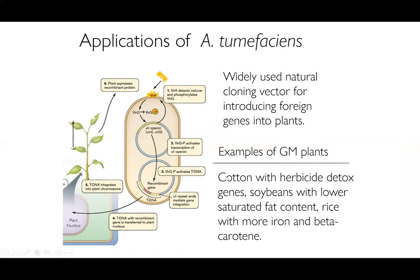There are many GM plants we use in everyday life that you may not know about. These include cotton with herbicide detox genes to allow spraying more pesticides without deleterious effects, soybeans with lower saturated fat content — good for people suffering from heart disease — and rice with more iron and beta carotene, which we call golden rice. These are three major crops we use on an everyday basis, all derived from Agrobacterium tumefaciens.